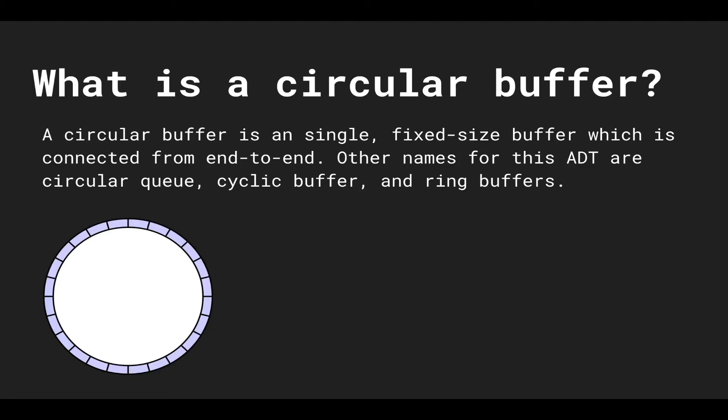A circular buffer is a single fixed size buffer which is connected from end to end. Other names for this abstract data type are circular queues, cyclic buffers, and ring buffers.